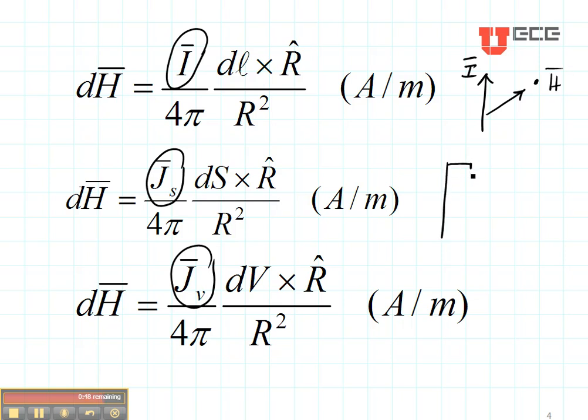If I had something like a strip, a surface, I might have a surface current distribution Js. Js would be given in amps per meter squared, and notice it does have a direction.